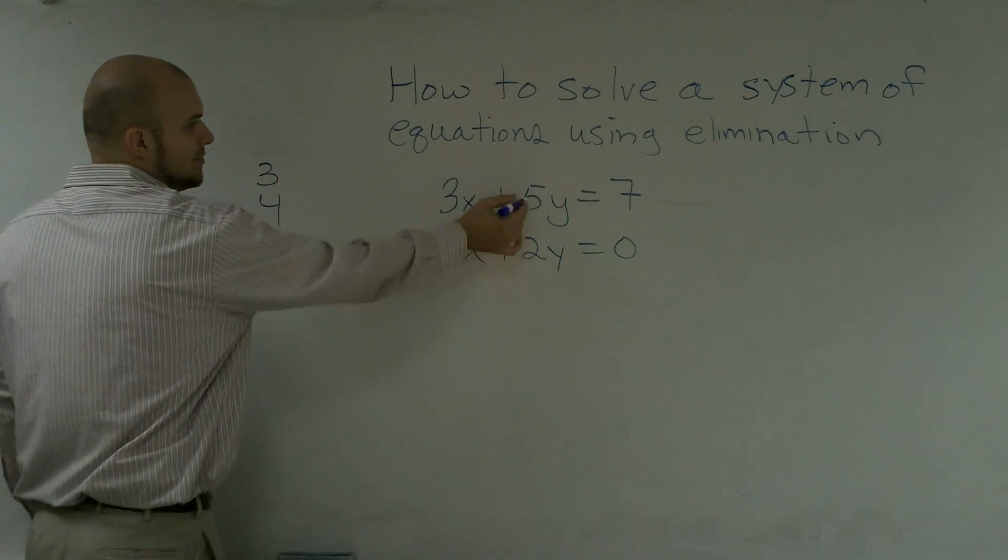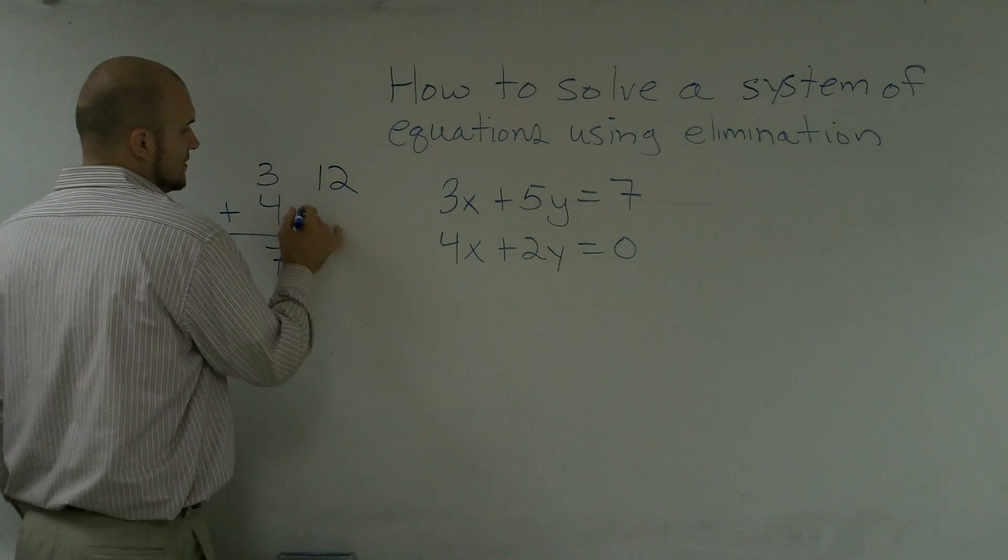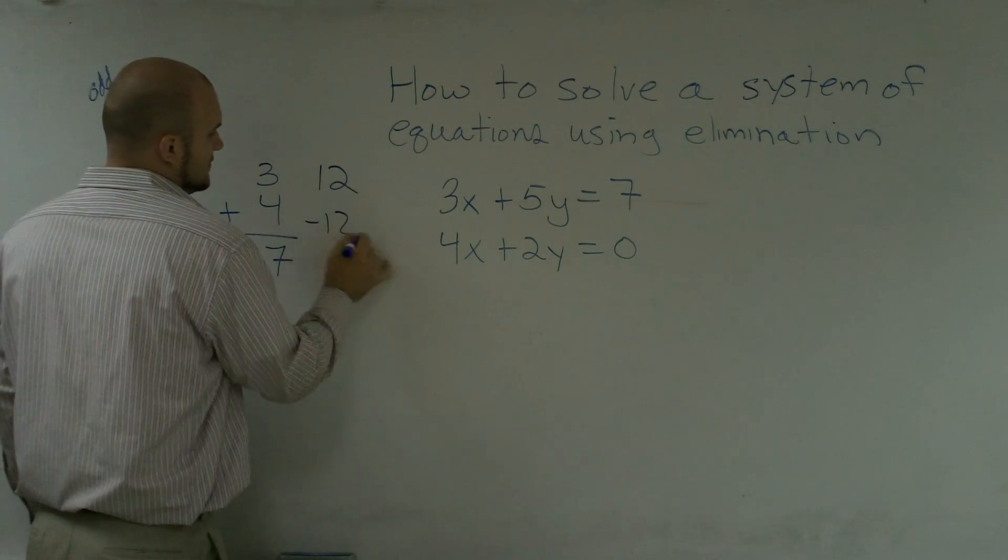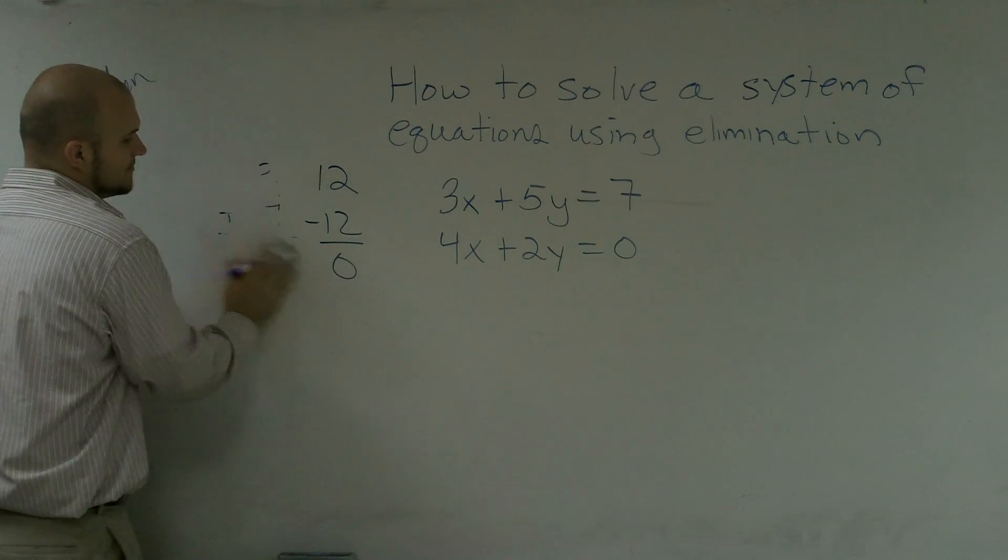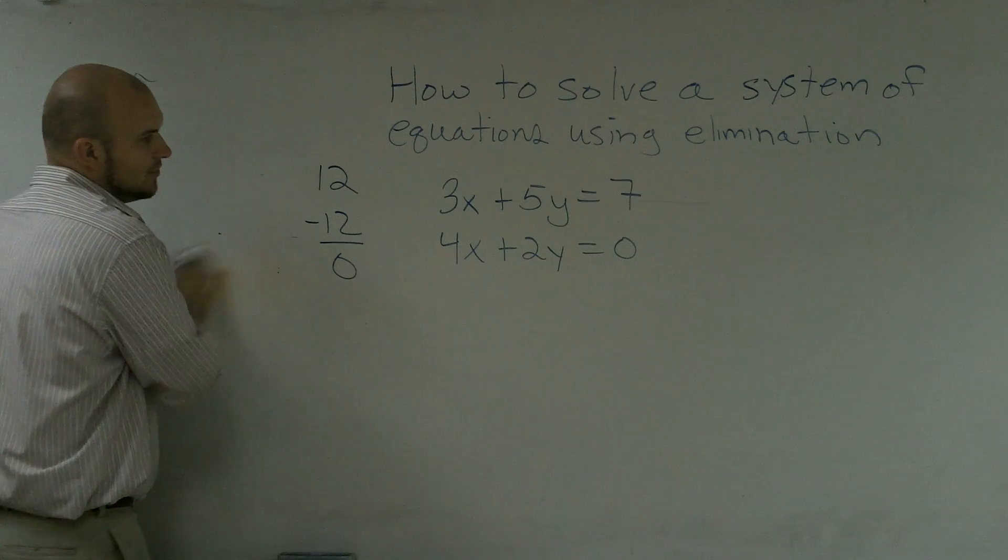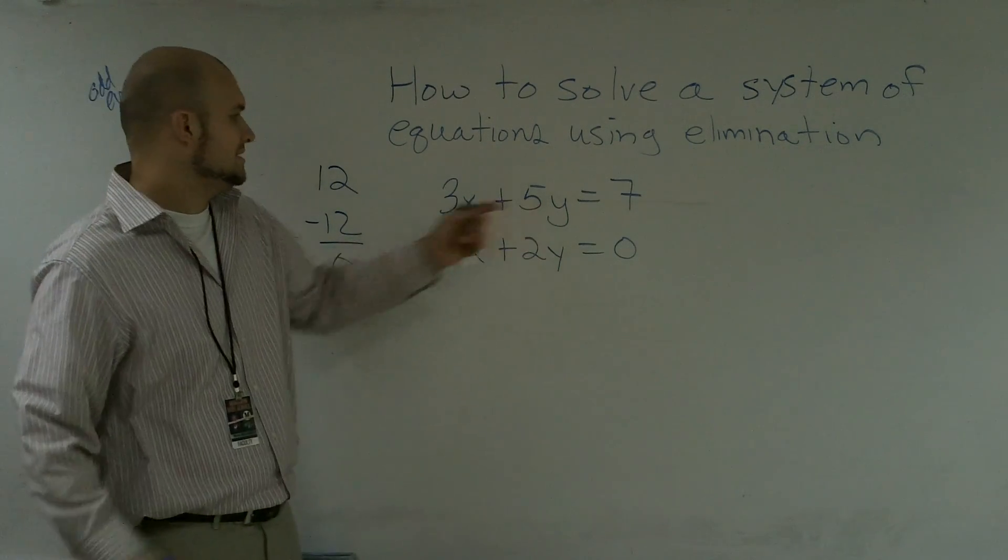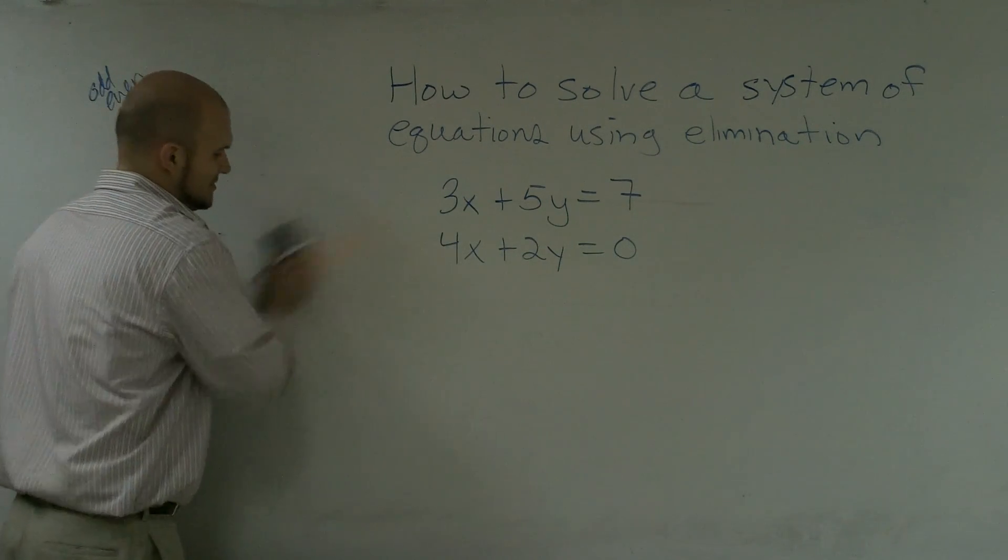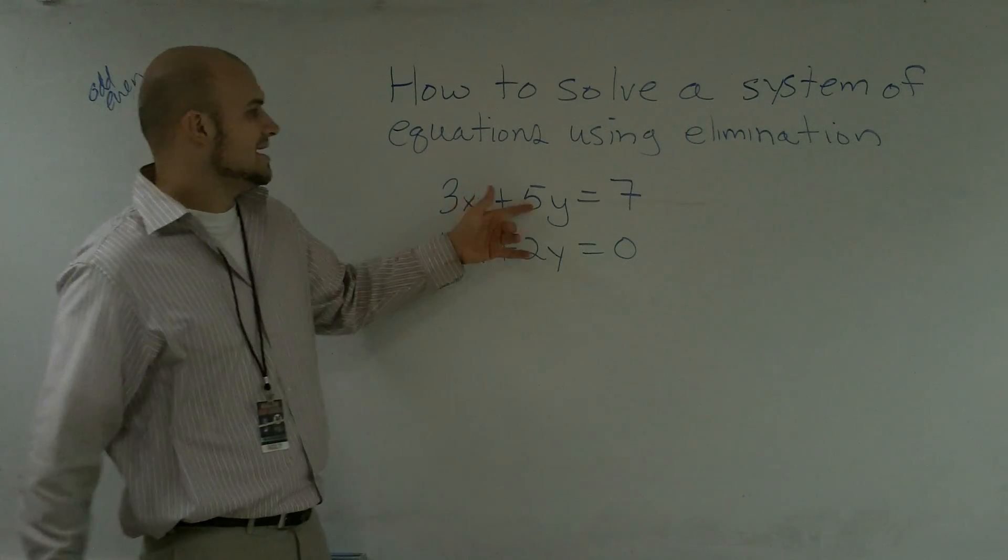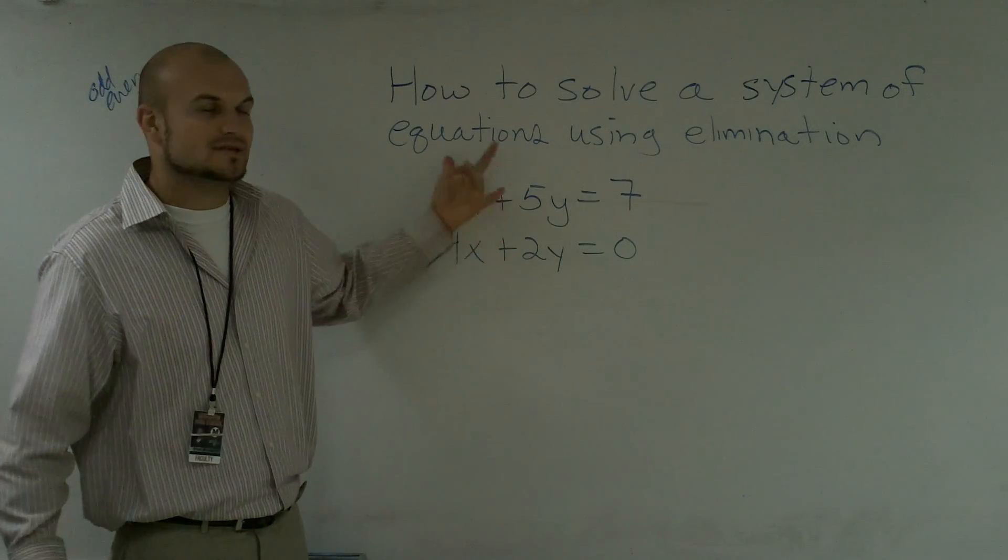Because if I both make these be 12 and I have 12 minus 12, that's going to give me zero. So that's my ending goal. To get this, I'm thinking of the 12. However, the least common multiple for 5 and 2 is going to be 10.